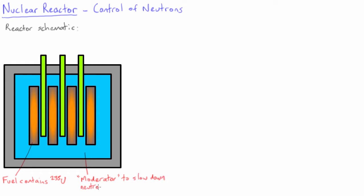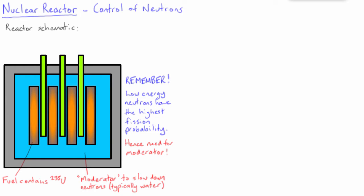Between and surrounding the uranium fuel rods is something that will slow down the neutrons. This is because the low energy neutrons have the highest probability for initiating a fission reaction. This material is called the moderator because it moderates the energy of the neutrons. The most common material used for the moderator is water.